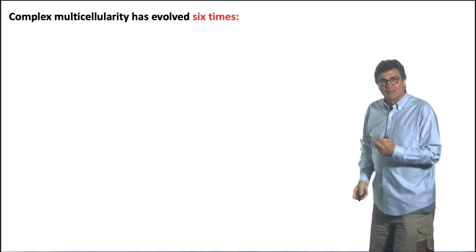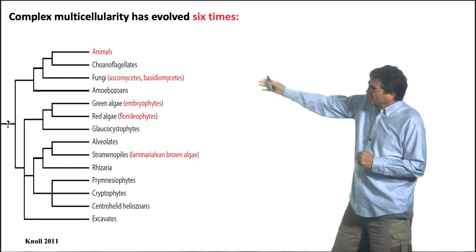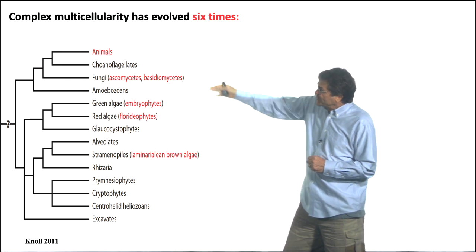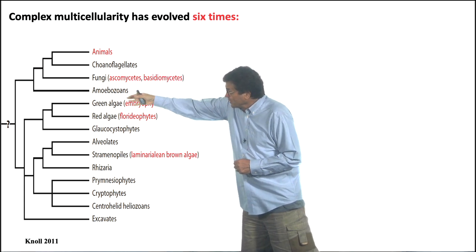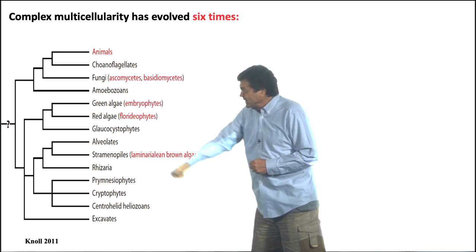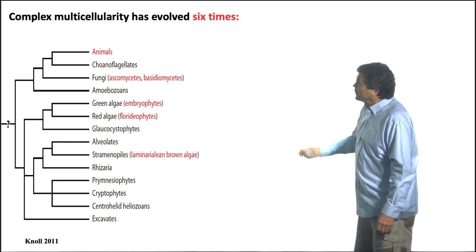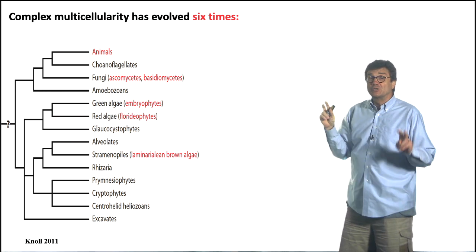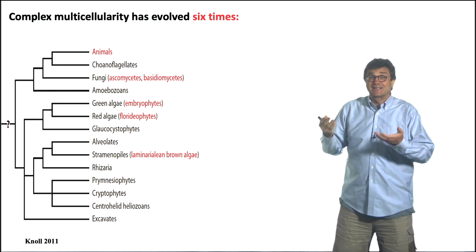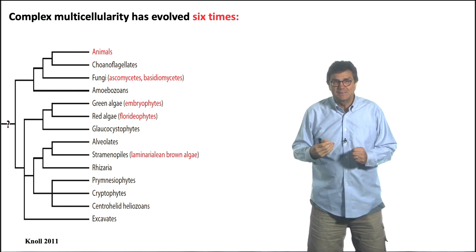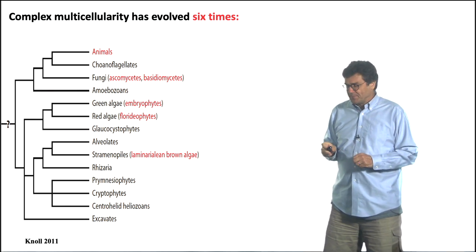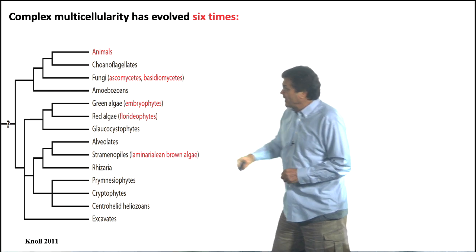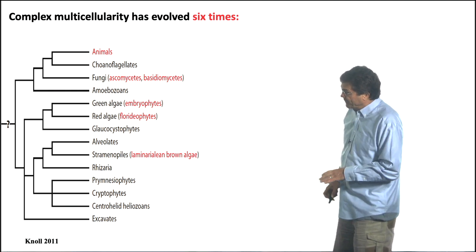Here's a chart of all eukaryotes — animals, choanoflagellates, fungi, amoebas, green algae, et cetera. The text in red are the ones where we have these six independent times that complex multicellularity has evolved. We have animals and two types of fungi, et cetera.